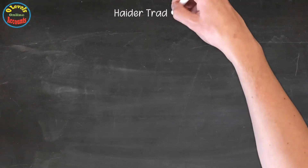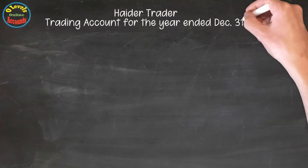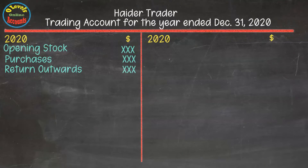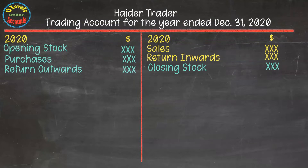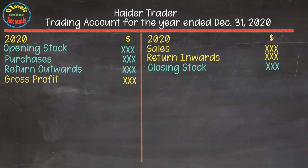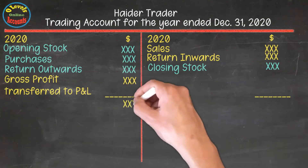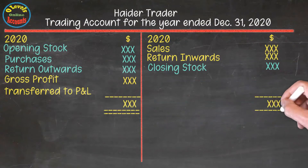In the horizontal format, on the debit side we put all components relating to cost of goods sold except closing inventory. On the credit side we put the sales portion and closing inventory. Normally it has a credit balance and gross profit is placed on the debit side, or in the case of gross loss, it is placed on the credit side.